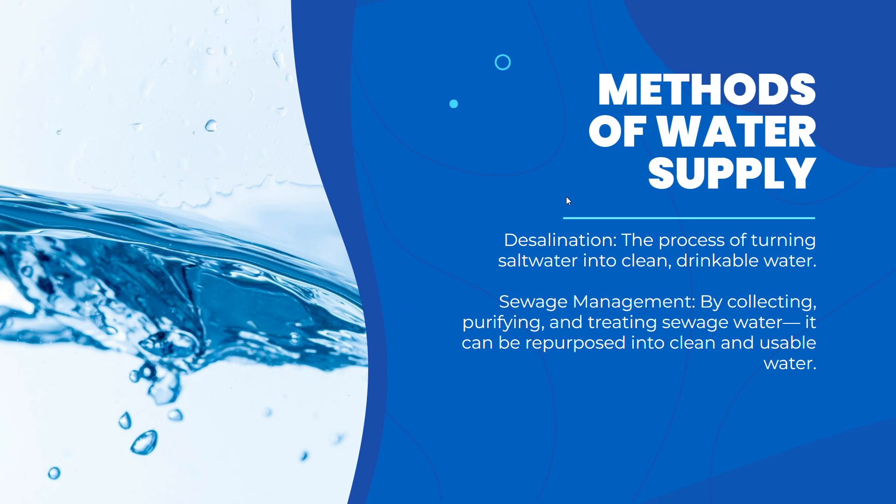Desalination and sewage management are both methods and types of water supply, depending on the context. Desalination is the process of turning salt water into clean and drinkable water, so it is both a water supply and a way to make water potable. Sewage management involves collecting, purifying, and treating sewage water so that it can become usable and clean again. Desalination can also be argued to be a way to store water.